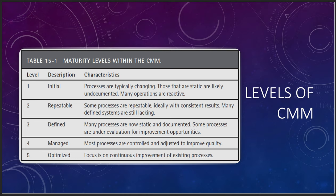There are very different levels within the Capability Maturity Model. Level 1 — Initial: processes are typically undocumented and reactive. Many operations are just getting kicked off. Level 2 — Repeatable: some processes are repeatable, ideally with consistent results, but defined systems or processes are still lacking. Level 3 — Defined: many processes are now static and documented. Most companies we work with are at level three, with some processes under evaluation for improvement — moving to the cloud or making a big process change.